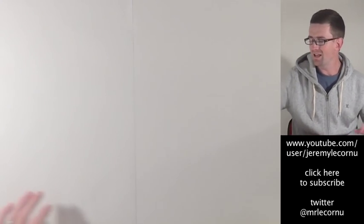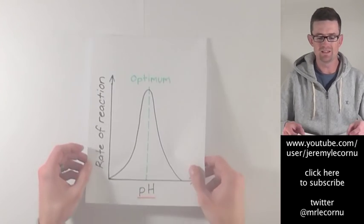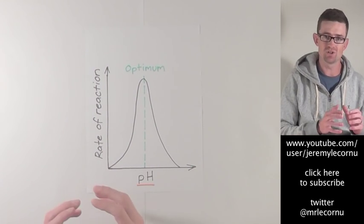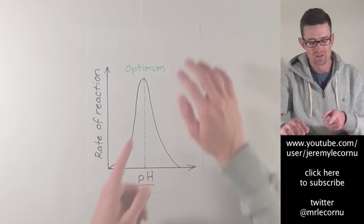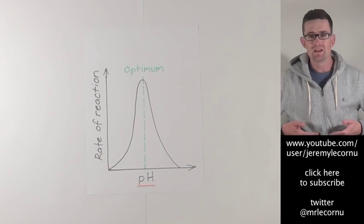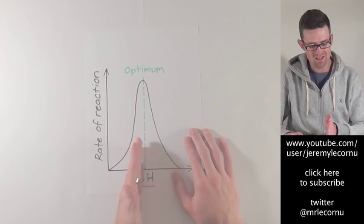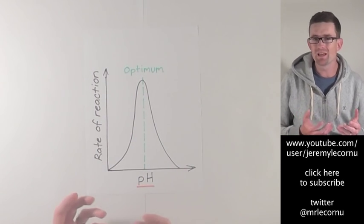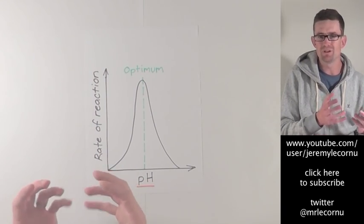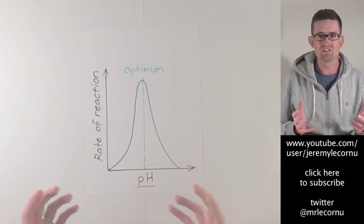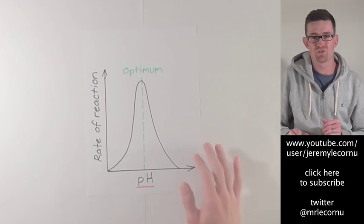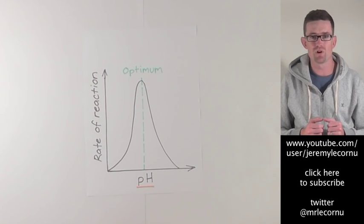The next factor is pH level — how acidic or basic a solution is. Different enzymes function best at different pH levels; that level where they function best is called the optimum. For example, an enzyme in my stomach functions best at an acidic pH, around pH 3. An enzyme in another part of the body, like the blood, would function best at a more neutral pH — a higher pH than 3 because it's not as acidic as the stomach environment.